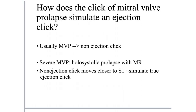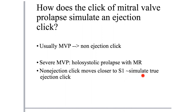Regarding how the mitral valve prolapse click simulates an ejection click: usually MVP is associated with non-ejection clicks occurring in mid-systole. However in severe MVP with holosystolic prolapse starting from the beginning of systole - usually associated with mitral regurgitation - the non-ejection click moves closer and closer to S1, starting to simulate a true ejection click.